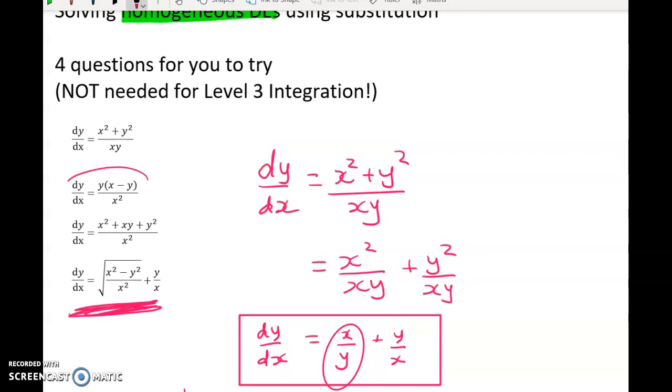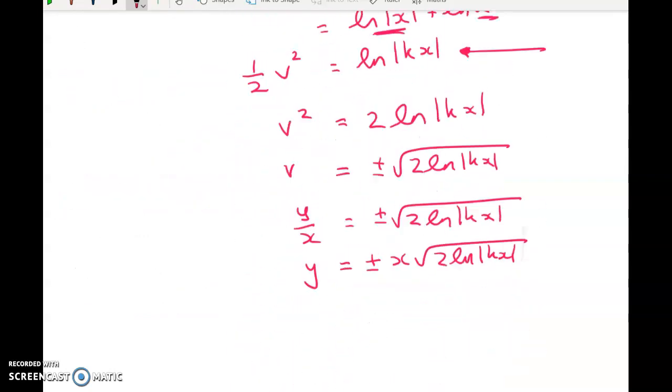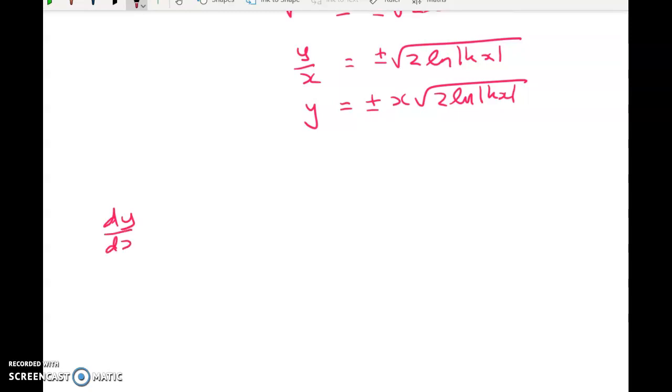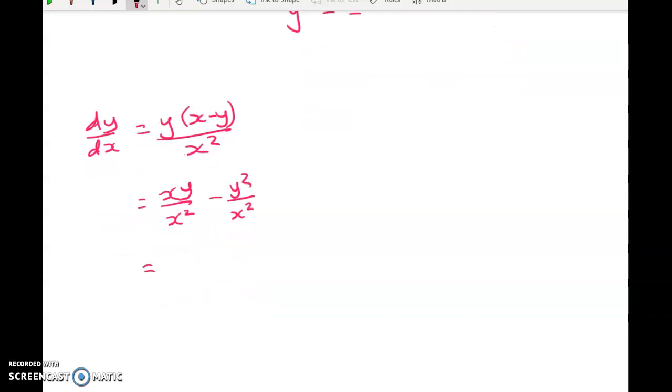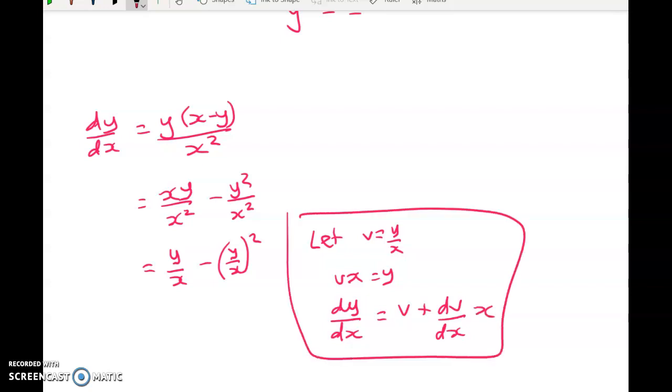So let's look at the second one, which is just about the same. So question two, dy by dx is equal to y times x minus y over x squared. So cleaning that up carefully gives me xy over x squared minus y squared over x squared, which simplifies to y over x minus y over x squared. And we can go quite quickly now at my sub. So let V equal y over x. Vx equals y, dy by dx is equal to V plus dV by dx times x.